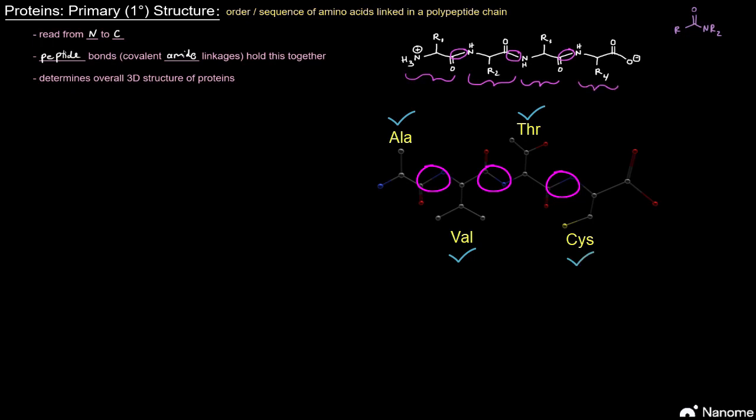So if I were to go through and read the order of this, I would just mention this amino acid first, based on its R group, and then this one right in here, and then this one. So this would be amino acid number one, amino acid number two, amino acid number three, and amino acid number four. And that would be the actual order, the actual primary structure.